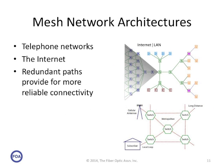A mesh network is like the internet or the phone system, where the switches have connections to multiple other switches. That provides redundant paths for more reliable connectivity. In the phone system, it means you're much less likely to get a circuit busy. And in the internet, it means that you can almost always get from point A to point B, but you don't quite know what the path is going to be.